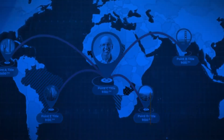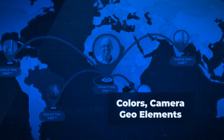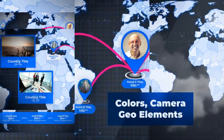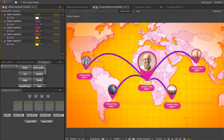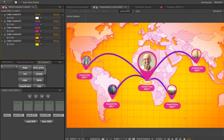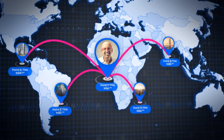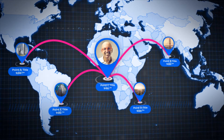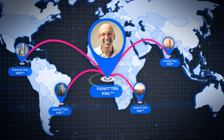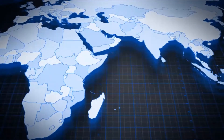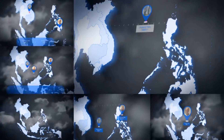Working with the template is easy because the project contains three types of settings. The first type of settings allows you to customize the colors of the map individually for your design. The second type of settings adjusts the position of geo marks and routes on the map. The third type of settings is to control camera movement over the map, so you can come closer to any point with ease.